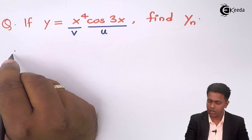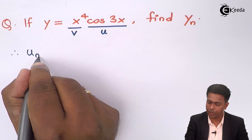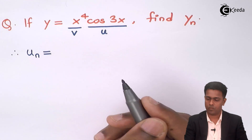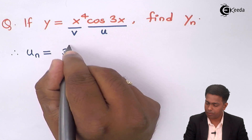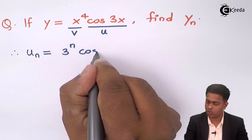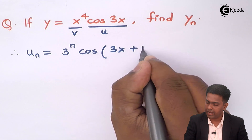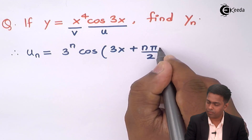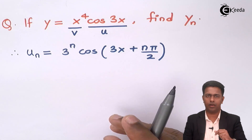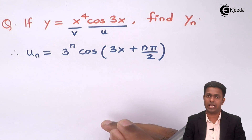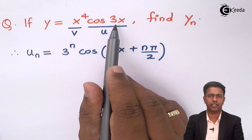Therefore, the nth derivative of u, which is uₙ, will be given by 3 to the power n times cos of (3x + nπ/2). We have seen this formula when we did the basic formula of nth derivative — this is the formula for the nth derivative of cos(3x).